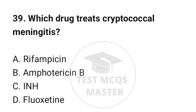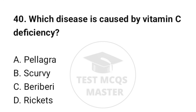Question number 39: Which drug treats cryptococcal meningitis? The correct option is B: Amphotericin B. Question number 40: Which disease is caused by vitamin C deficiency? The correct option is B: Scurvy.